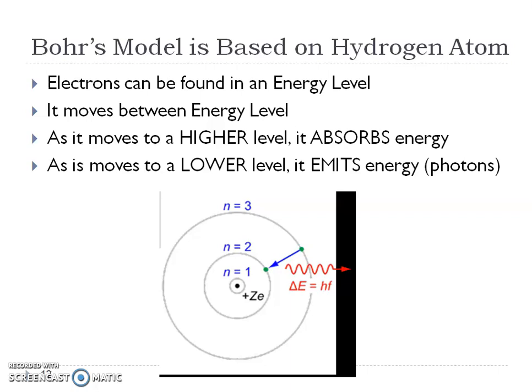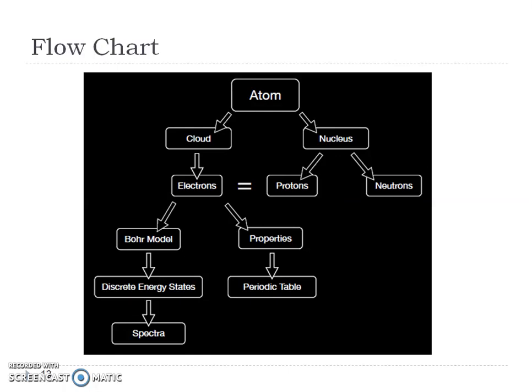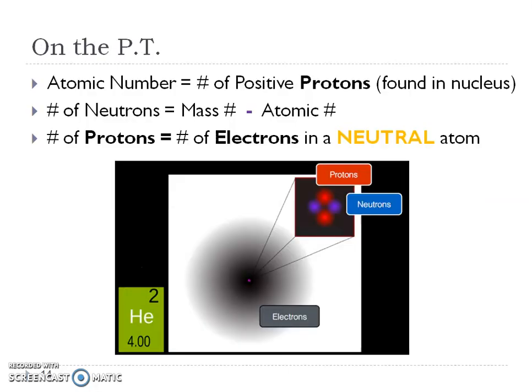So we want to remember, though, he said that the energy, the electrons can only be found in certain energy levels and they are going to absorb energy as they go from lower to higher. And they're going to release or emit energy in the term of photons as light when they return back down. So they're jumping here and they're jumping here. And we want to remember that it has to move from one energy level to another. However, there's no in between.